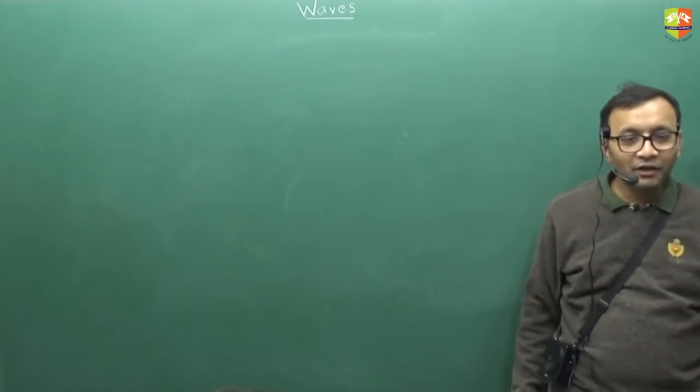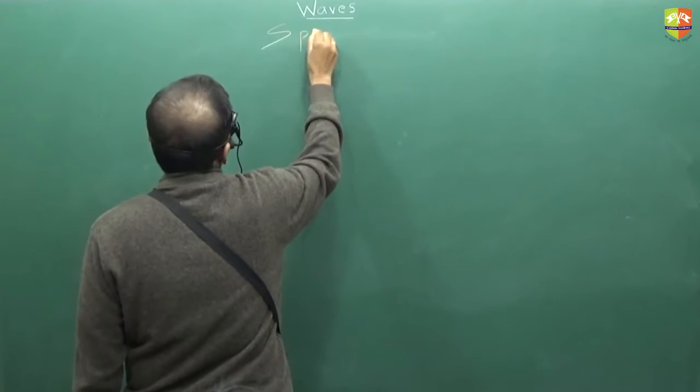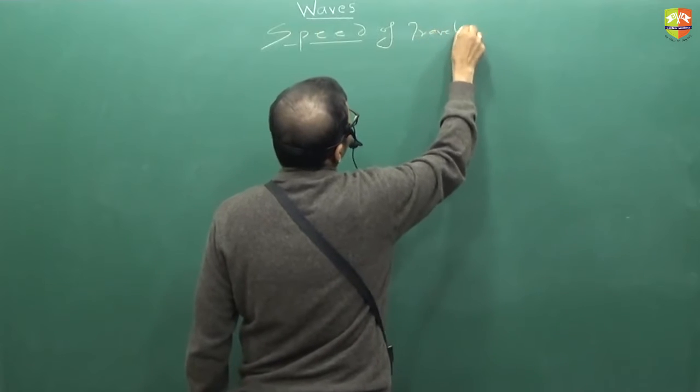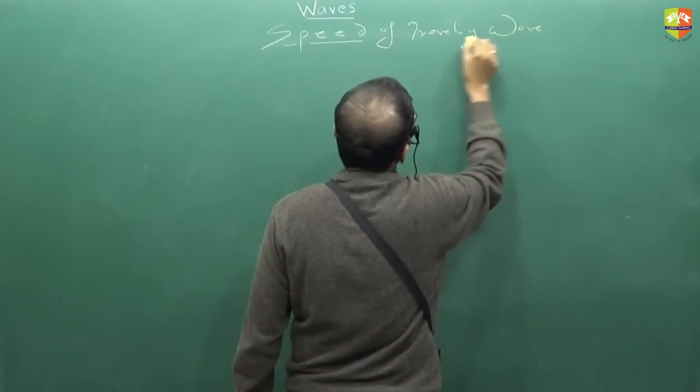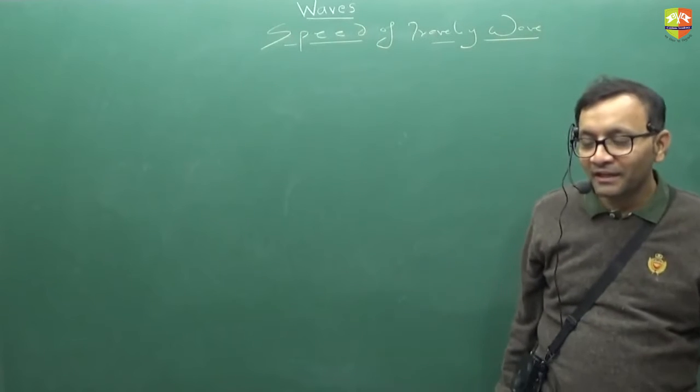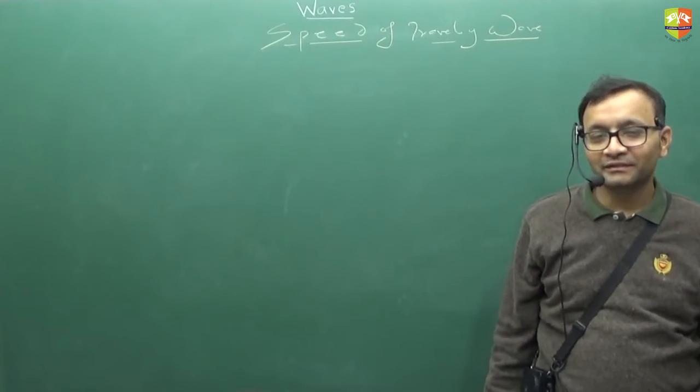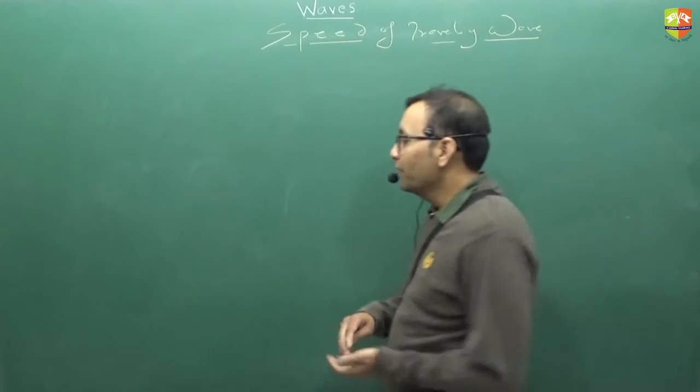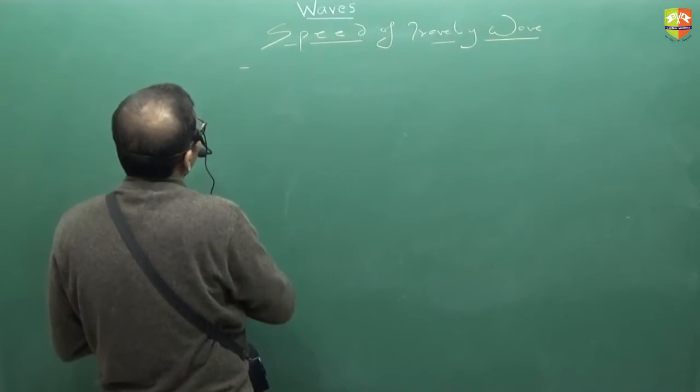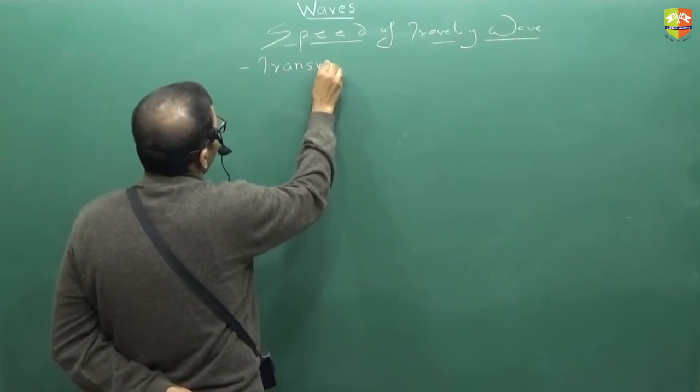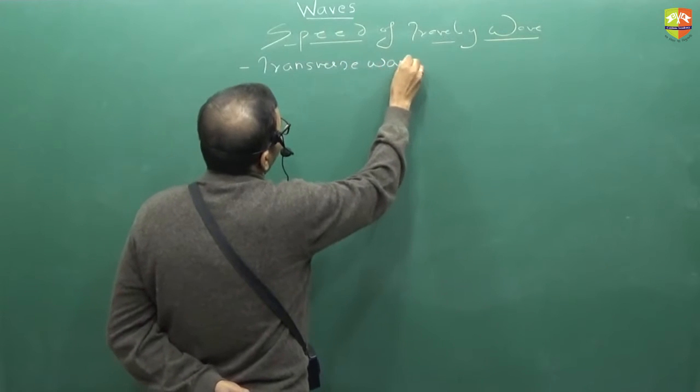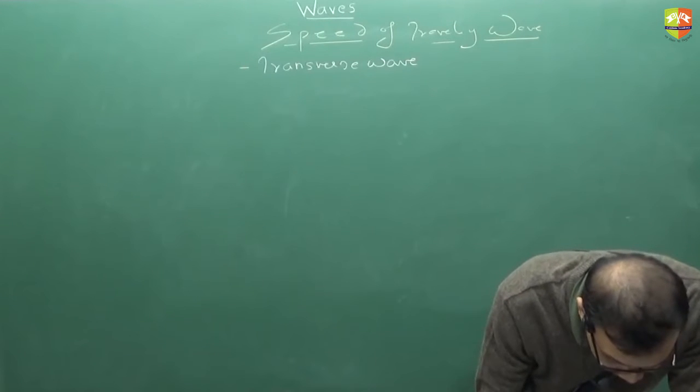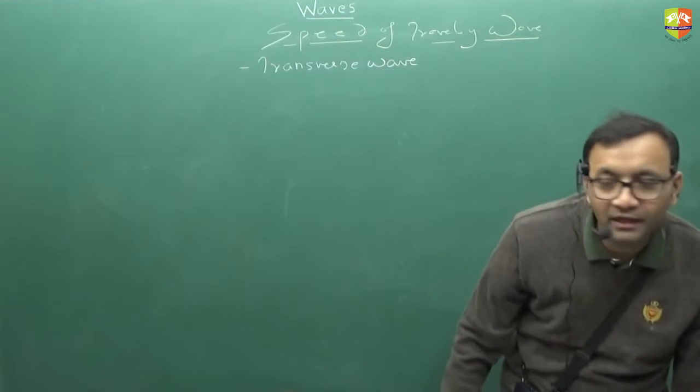Write down. Speed of travelling wave. Now what we have just learnt? Speed of it is equal to omega by k. Right? It is omega by k.